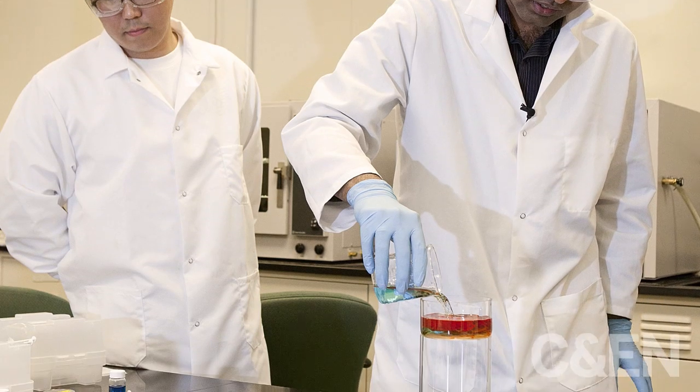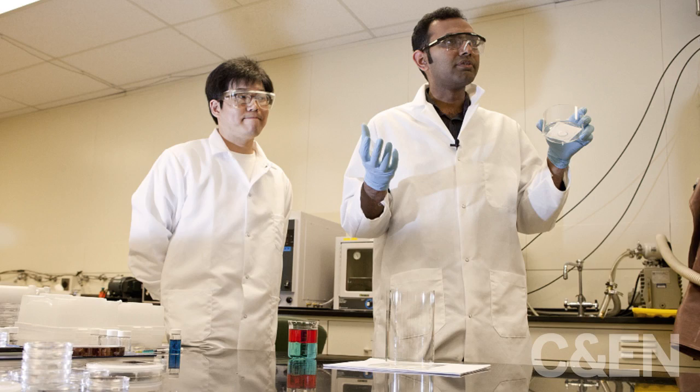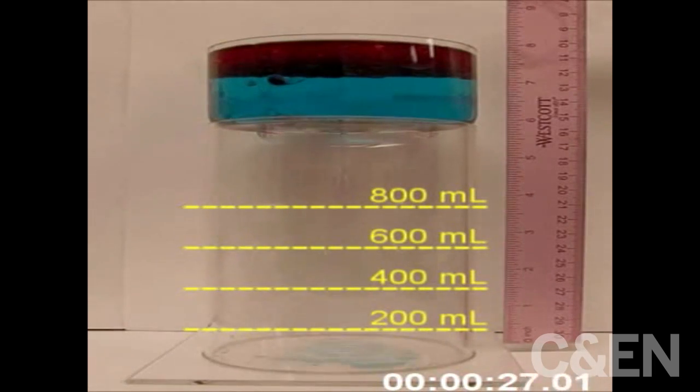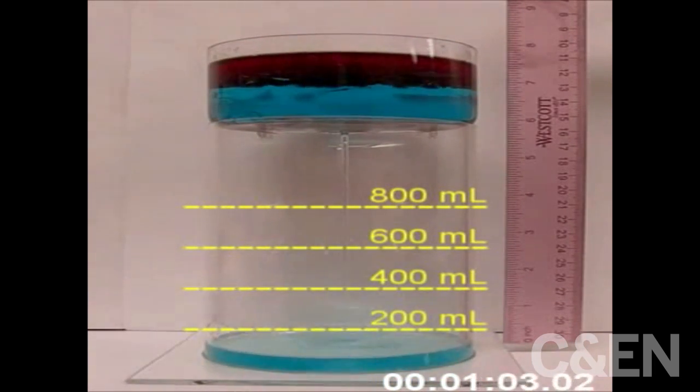Material scientists at the University of Michigan and the Air Force Research Lab have teamed up to make a new type of membrane, one that can separate any kind of oil and water mixture by simple gravity filtration.